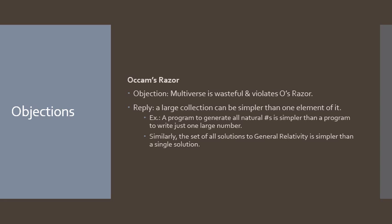His reply to this is actually having a large collection of things can be simpler than having only one element of it. So for example if you have a program that generates all the natural numbers, that could be a much simpler algorithm than a program that writes just one large number, because there's a simple rule that you can follow. If you want to select out just one number and exclude a bunch of other ones then you might have to write more complicated rules.